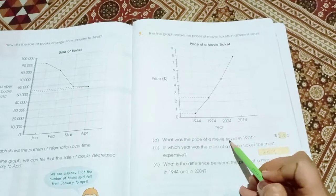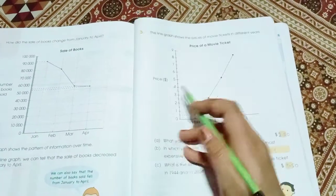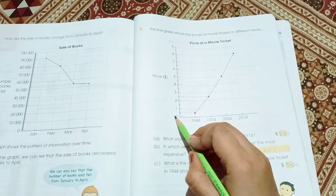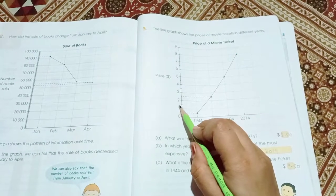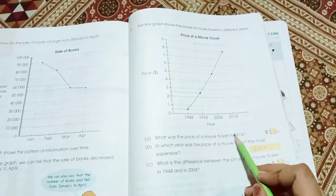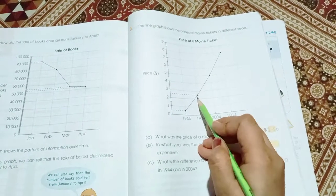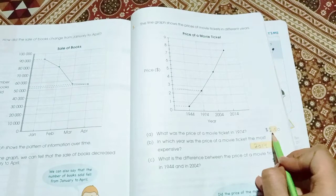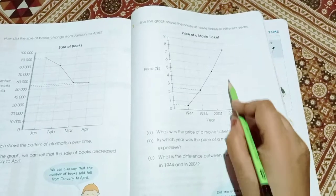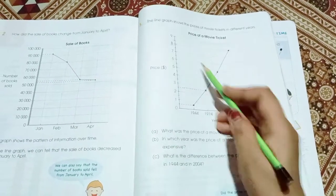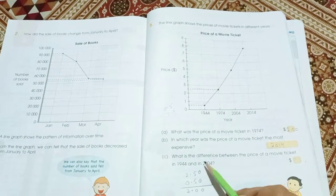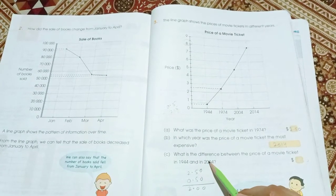Let's read. What was the price of movie ticket in 1974? Here is 1974. And the price of movie ticket is, we have the answer in 0.51. Then we have 1.5 to 2.5. So the amount of ticket in 1974 is 2.5. In which year was the price of the movie ticket the most expensive? 2014, because the amount is 8 dollars.